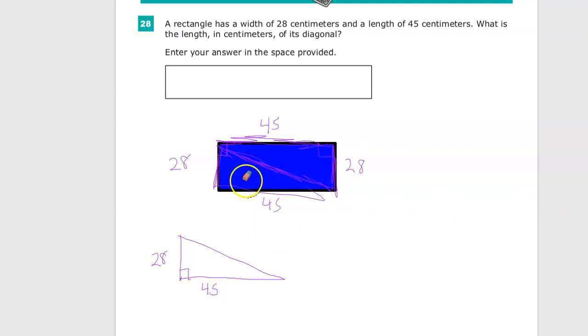The thing about having a right triangle to work with is that I know if I have two sides of the right triangle, I can find the third side using the Pythagorean theorem. Right triangle, you know two sides, you need the third side, Pythagorean theorem. So, A squared plus B squared equals C squared.